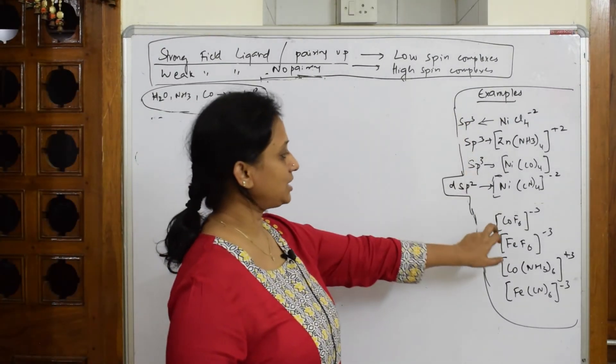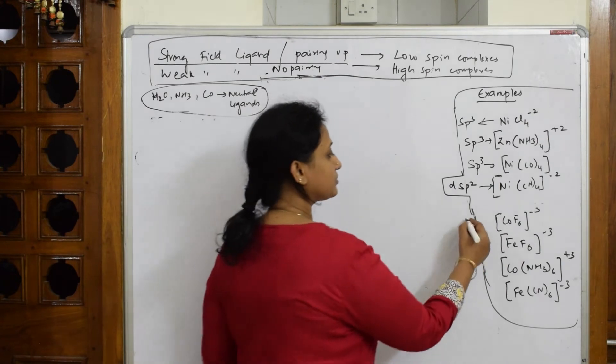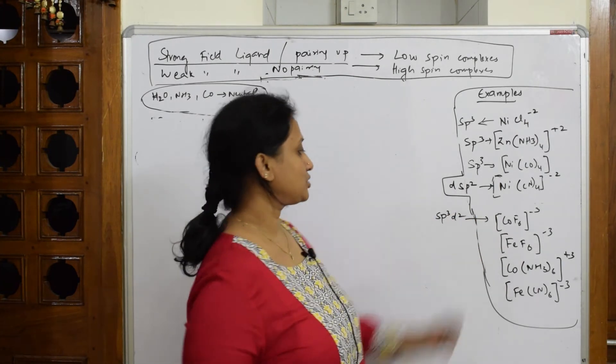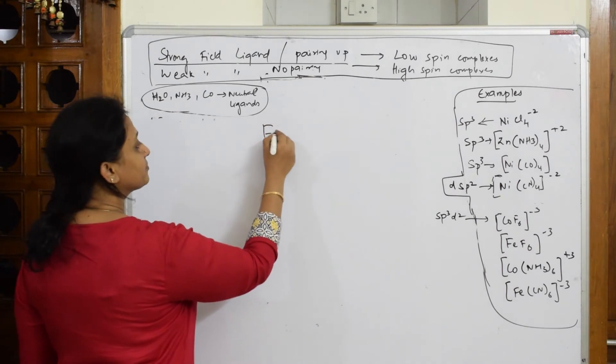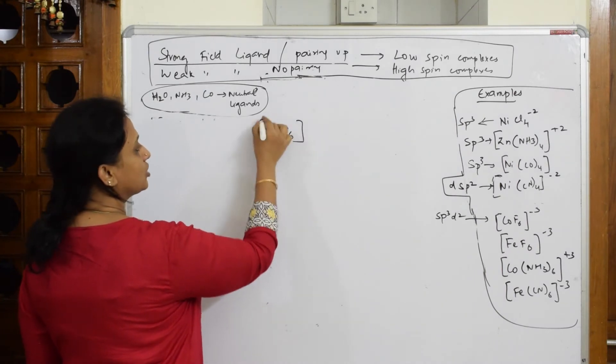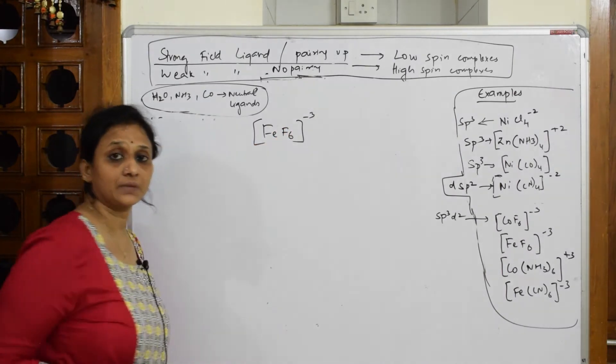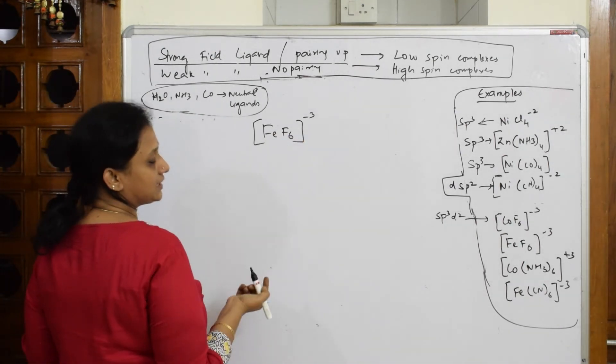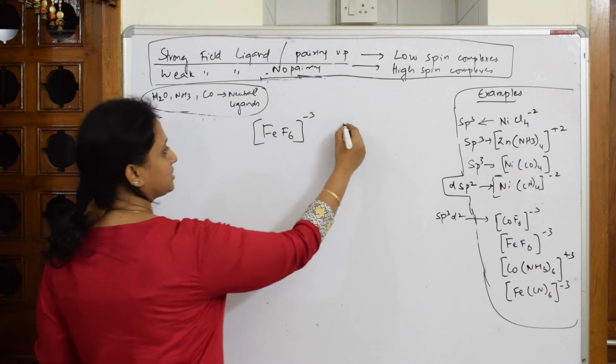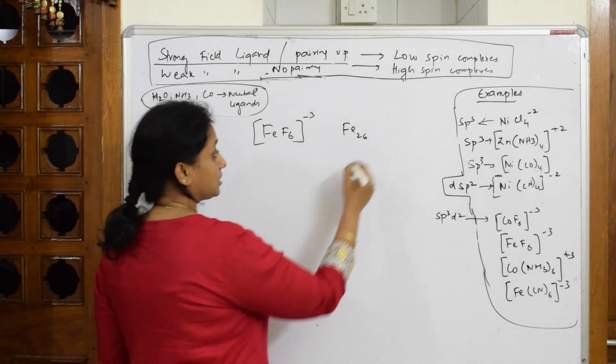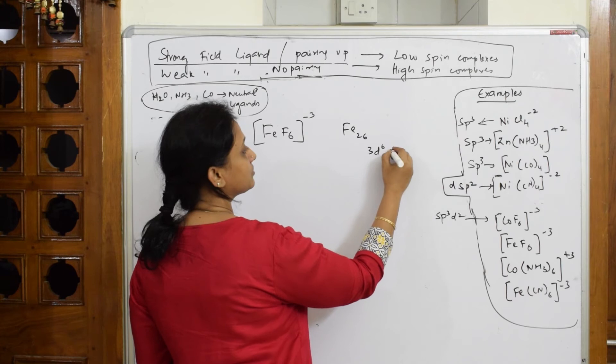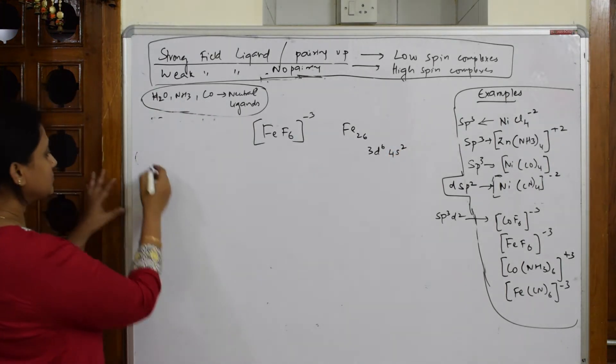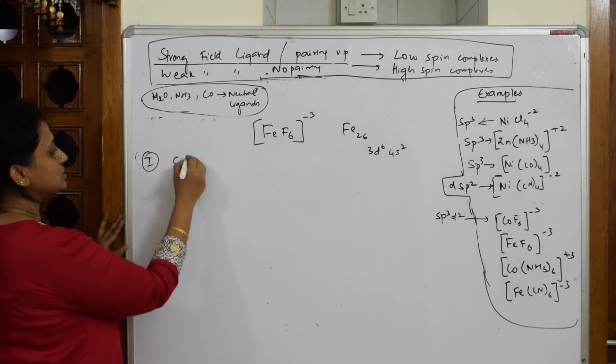Let's come back. We have already learned so many. What type of hybridization did we get for this? This is sp3d2. Let's come back to this: FeF6. Copy the complex carefully. In this particular complex, atomic number of iron is 26, configuration 3d6 4s2. Correct? Let's start. First step: calculation of oxidation state.